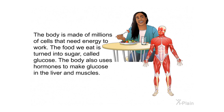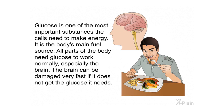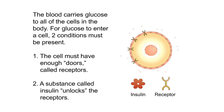The body is made of millions of cells that need energy to work. The food we eat is turned into sugar called glucose. The body also uses hormones to make glucose in the liver and muscles. Glucose is one of the most important substances cells need to make energy — it is the body's main fuel source. All parts of the body need glucose to work normally, especially the brain, which can be damaged very fast if it does not get the glucose it needs.